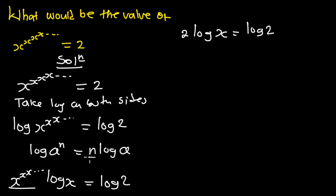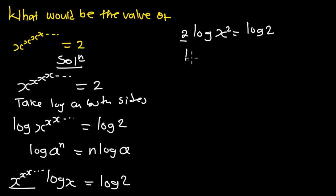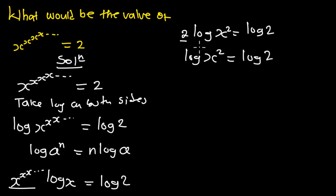From here we reverse the log power rule, bringing the two to become the exponent. So we have log of x to the power two is equal to log of two. Cancelling out the logarithm on both sides, we get x squared is equal to two.